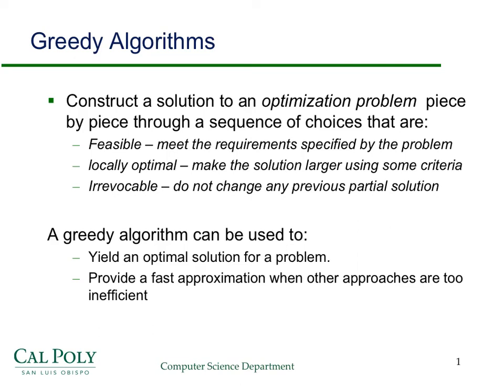In this screencast, I want to talk about greedy algorithms. In particular, I want to explore discovering a correct greedy algorithm for a particular problem and then proving that it is, in fact, correct. So, first of all, what is a greedy algorithm?